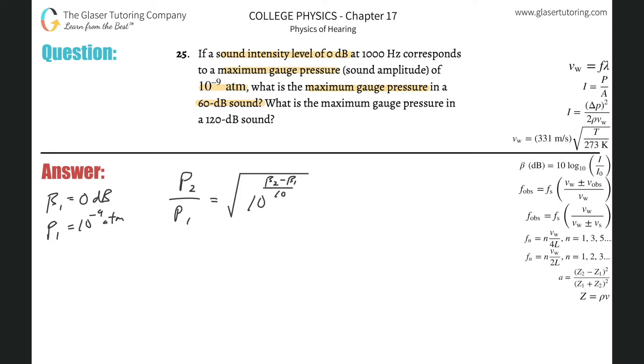Now what I realize, we have to find the gauge pressure, meaning p2, when the sound level has changed. So beta 2 now is going to be 60 decibels. Literally all we got to do is solve for p2 here. So we plug in everything that we know: p2 all over p1, which is 10 to the minus 9, equals the square root of 10 raised to the beta 2, which is 60, minus beta 1, which is 0, all over 10.